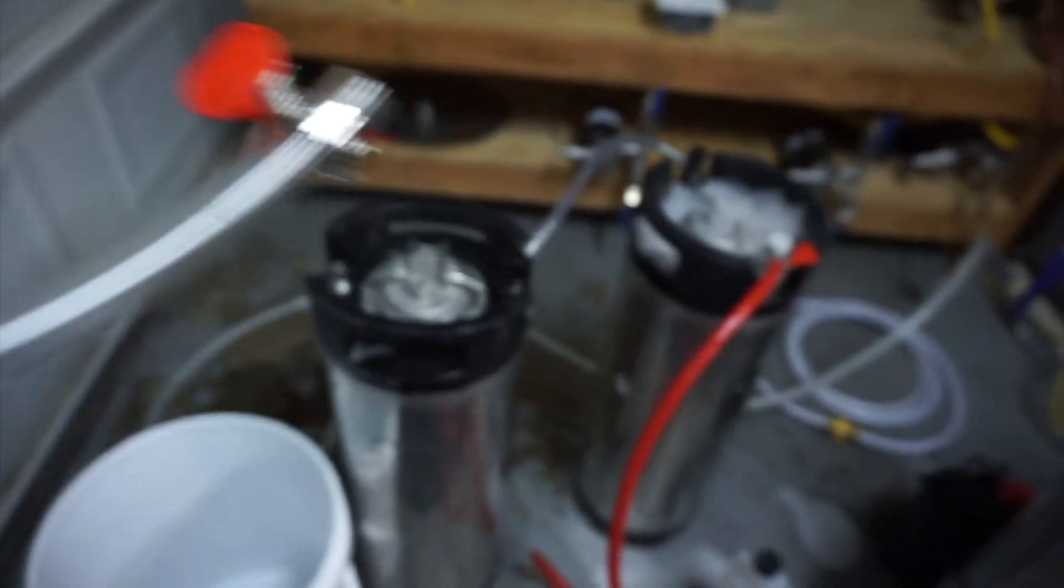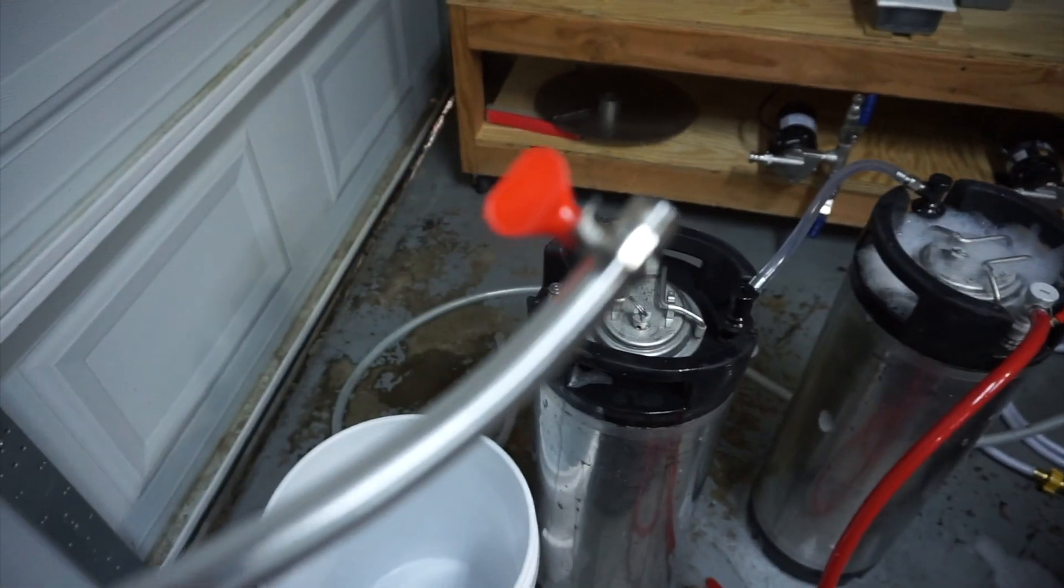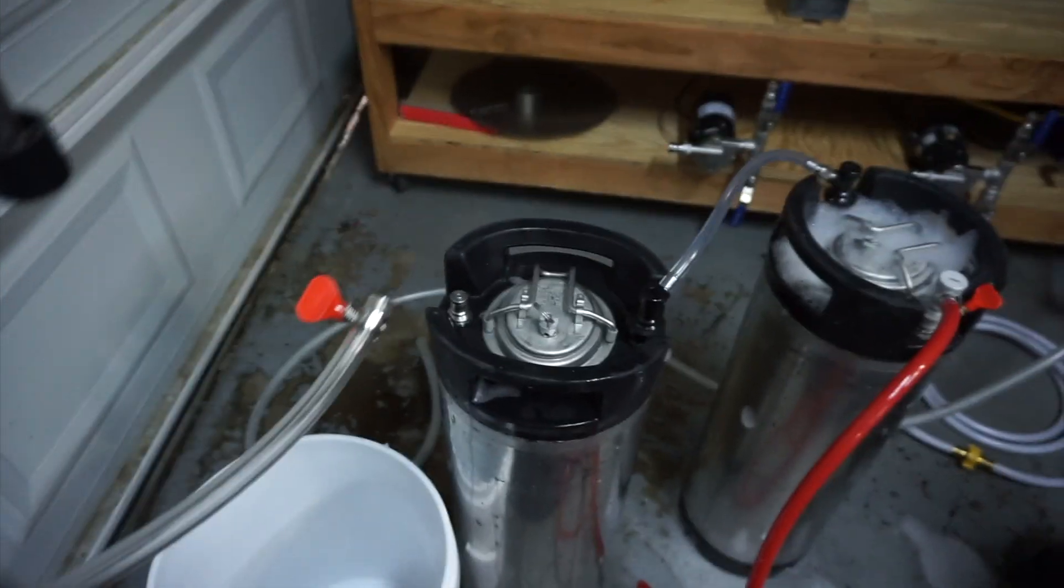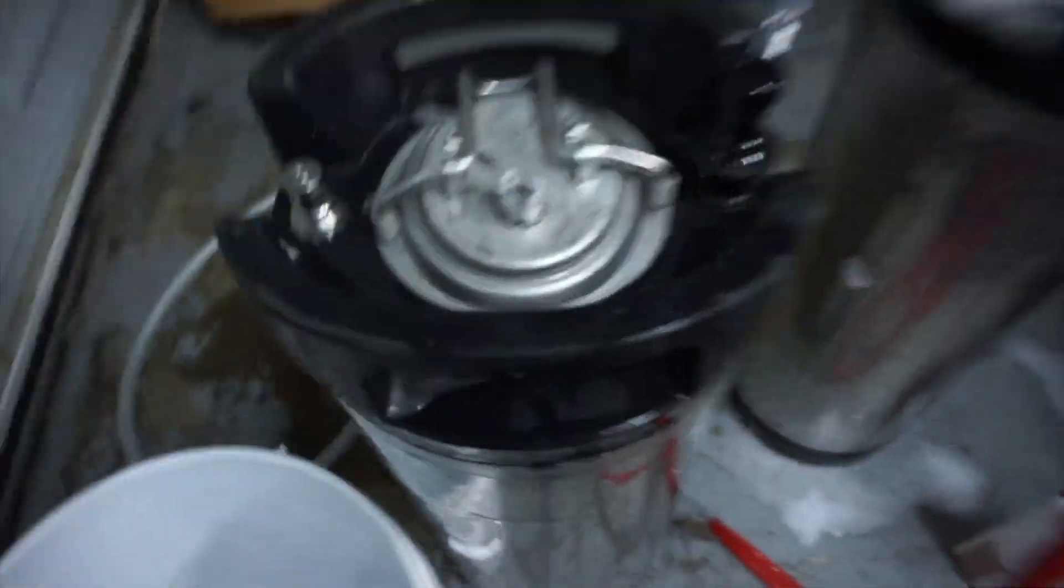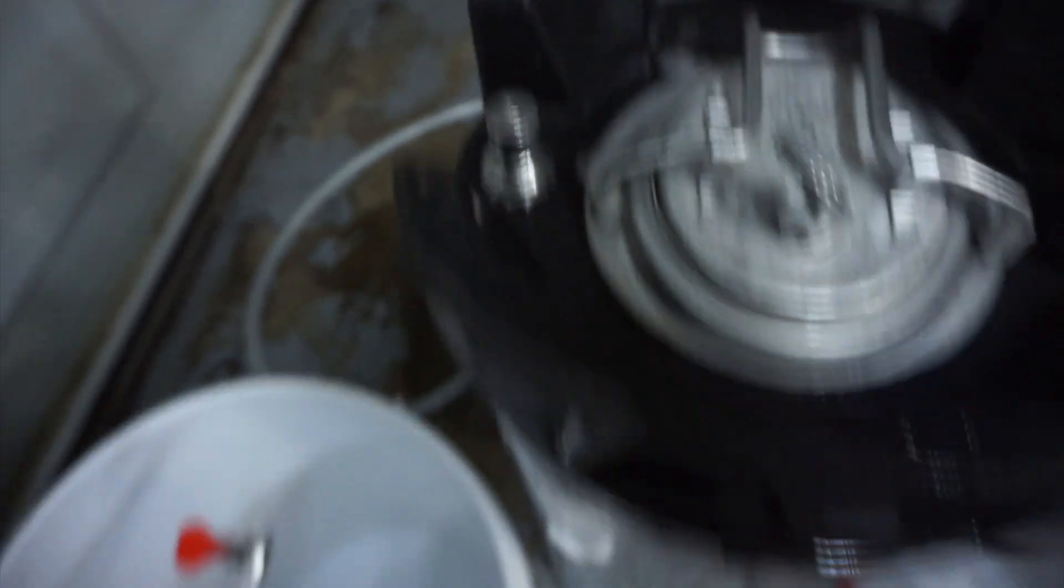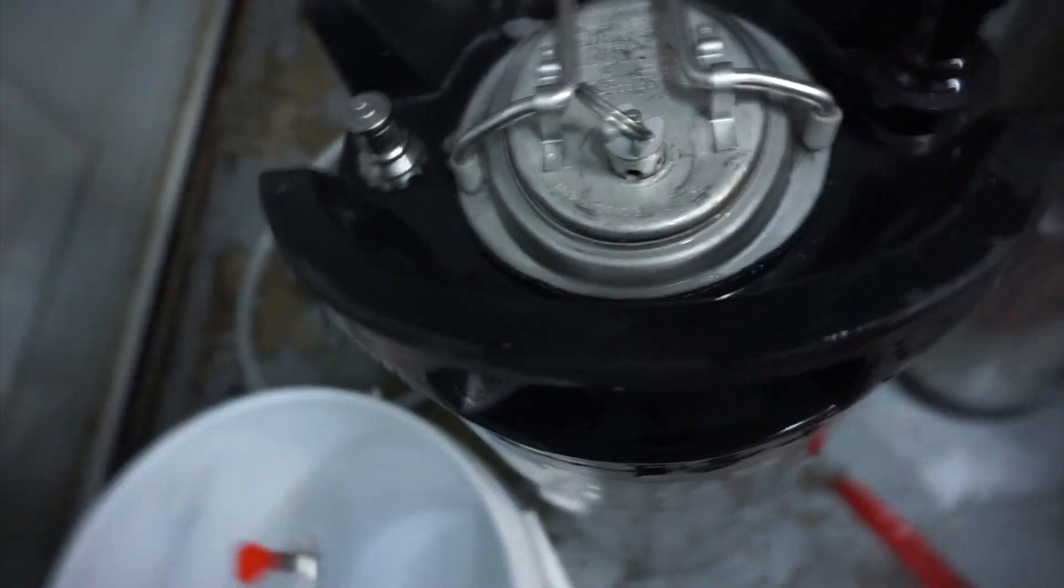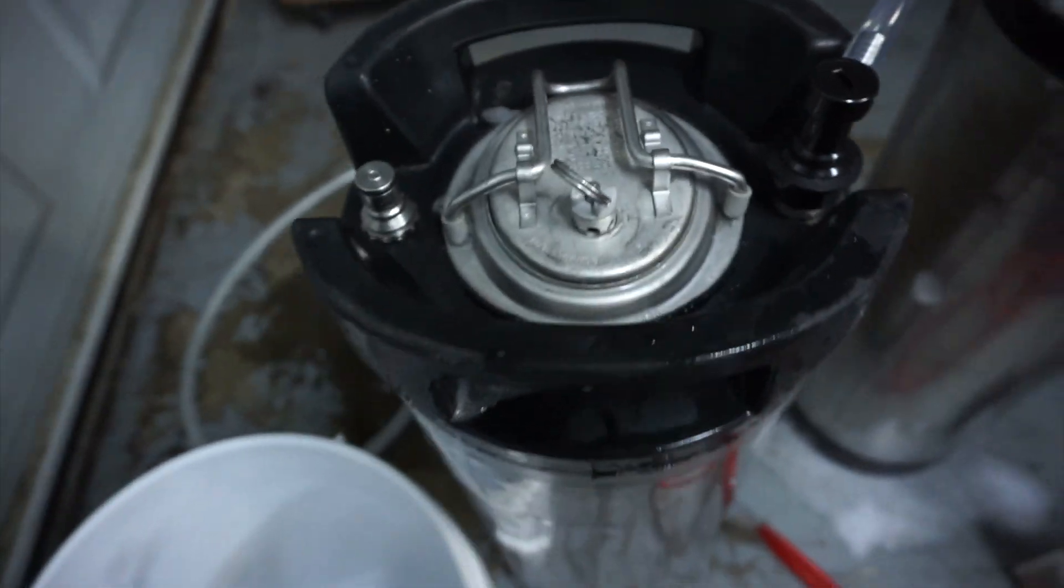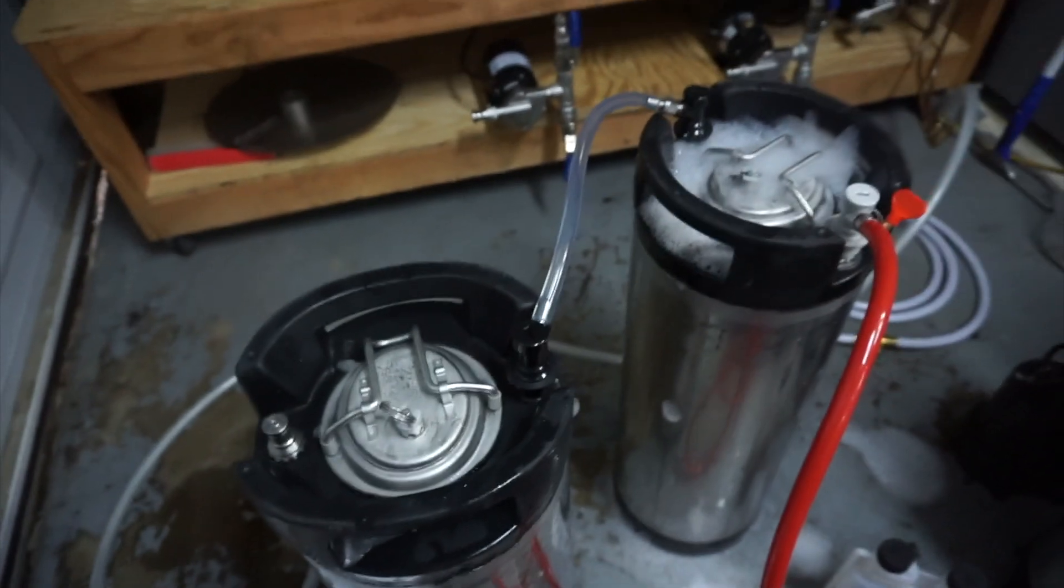There will be a ball lock attachment that'll go on the end of this into one of the kegs, and I leave the poppets open. If you want to do a closed transfer, you can run a line from the in post into some sanitizing solution, but either way, whatever you prefer, that's how I do it.